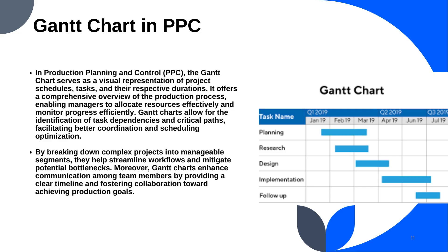A Gantt chart in PPC is a visual representation of a project schedule, tasks, and their respective timelines. It provides a clear and comprehensive overview of the production processes, allowing managers to plan, coordinate, and track progress effectively. Gantt charts display tasks as horizontal bars along a timeline, with the length representing the duration of each task. By visualizing task dependencies and overlaps, Gantt charts help optimize resource allocation and minimize idle time in production operations. They enable managers to identify critical paths and prioritize tasks to ensure timely project completion. Overall, Gantt charts serve as invaluable tools in PPC for enhancing communication, decision-making, and productivity.